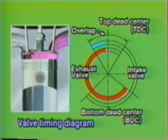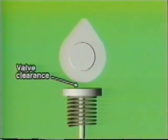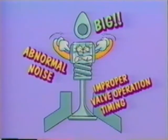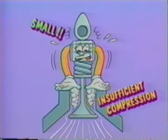There is a period of time during which both intake and exhaust valves are open. This period is called valve overlap. To enable each valve to open or close smoothly, appropriate clearance must be provided around the valve — this is called valve clearance. Excessive valve clearance causes abnormal noise and improper valve operation timing. Insufficient valve clearance causes incomplete valve closure, resulting in insufficient compression. The valve clearance must be adjusted to an appropriate value. The valve clearance in a cold state is different from that in a hot state, as it is affected by temperature.